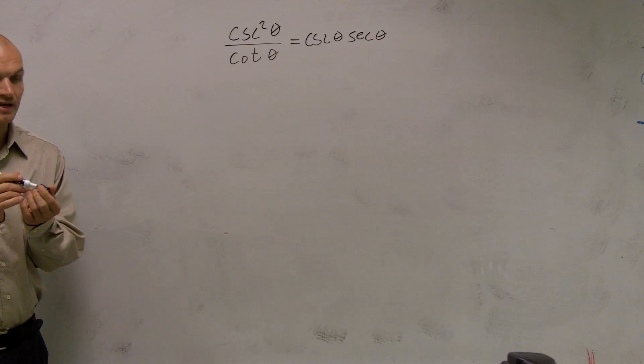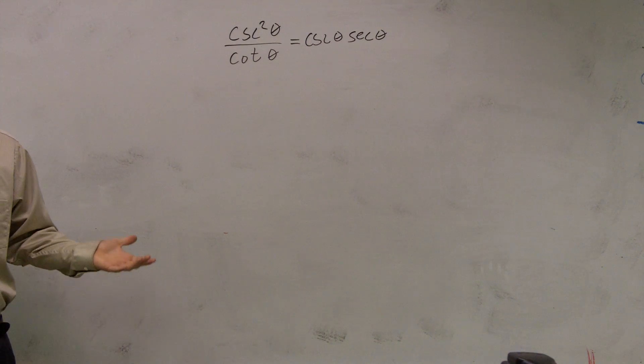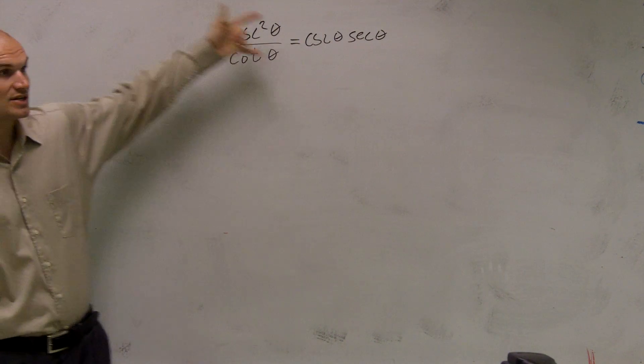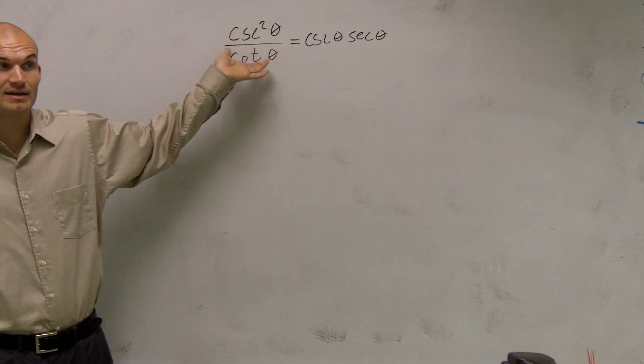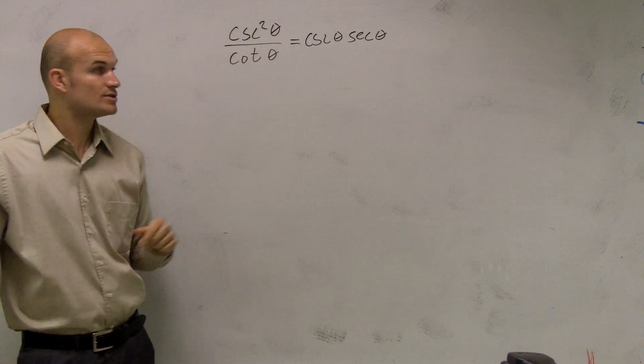One thing, guys, remember when we're verifying our trigonometric identities we want to get rid of our fractions. Get rid of the fractions. That's when you're simplifying. Well, if we notice this left side's a fraction and this one's not a fraction, that means I need to make this left side not be a fraction anymore, if I want to verify that they're equal to each other.